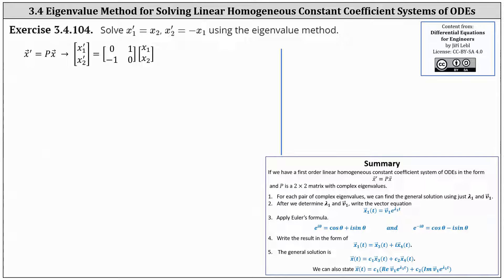We're asked to solve the system of differential equations: x₁ prime equals x₂, and x₂ prime equals negative x₁, using the eigenvalue method. The first step is to write the system as the vector equation x prime equals P times x, which is already done on the right.